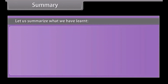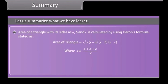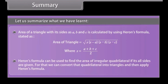Let us summarize what we have learned. The area of a triangle with its sides as A, B and C is calculated using Heron's formula. Heron's formula can also be used to find the area of an irregular quadrilateral if all its sides are given, by converting the quadrilateral into triangles and then applying Heron's formula.